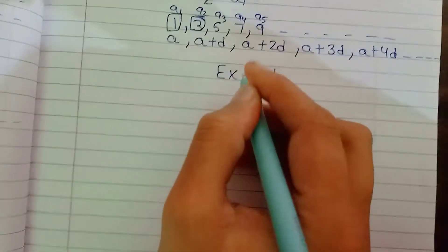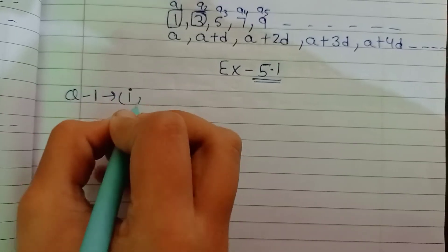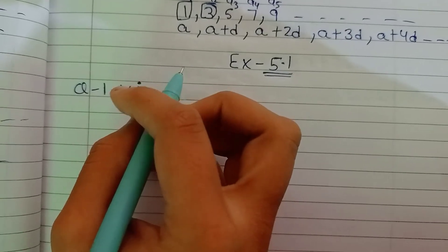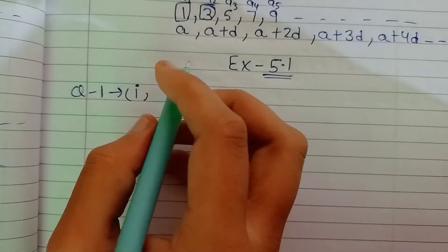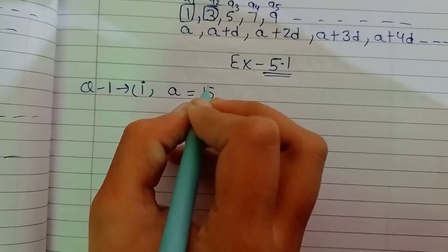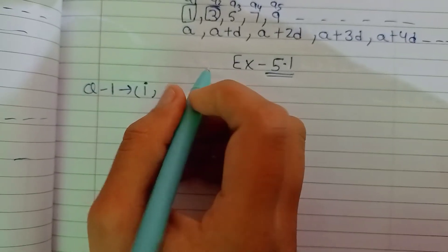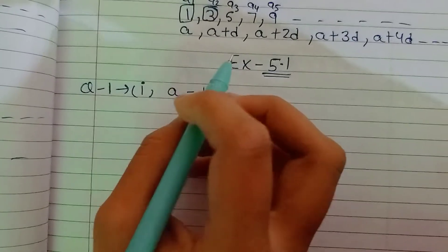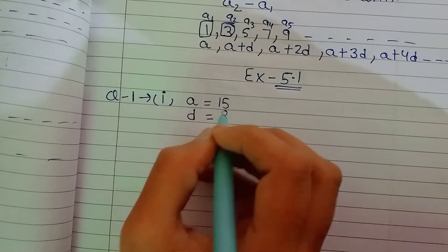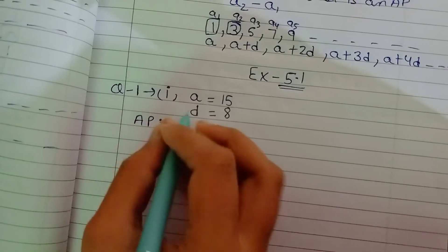Let's go to the exercise, which is the first part. The taxi fare after each kilometer when the fare is Rs. 15 for the first kilometer. So here a equals 15. And Rs. 8 for each additional kilometer. That is our second term, so d will be 8. And we say that we will start with AP. I have told you how to get the terms.